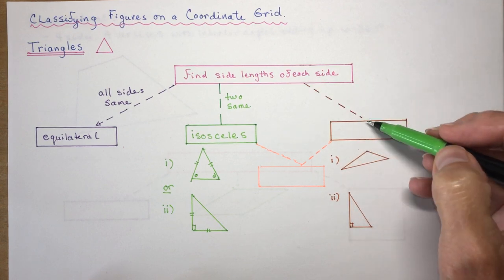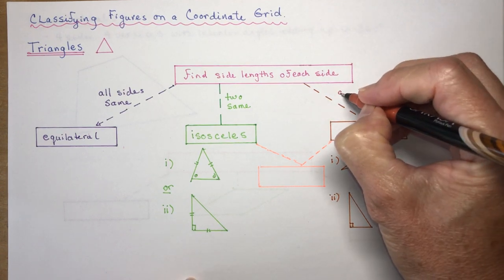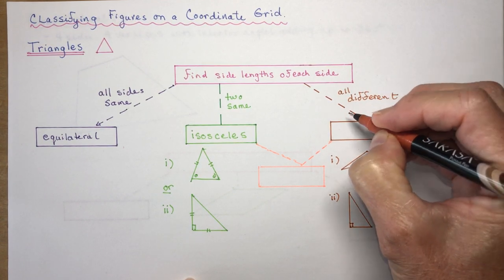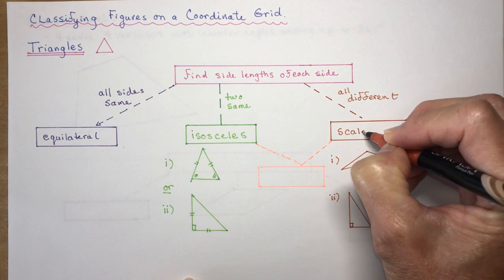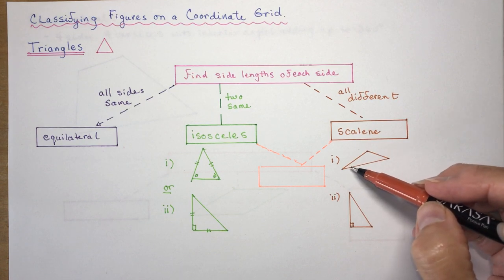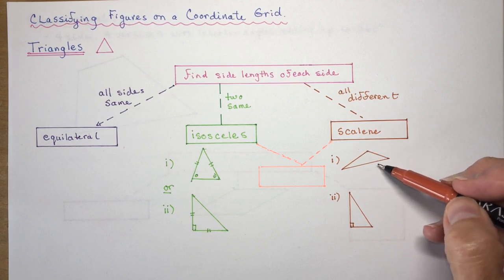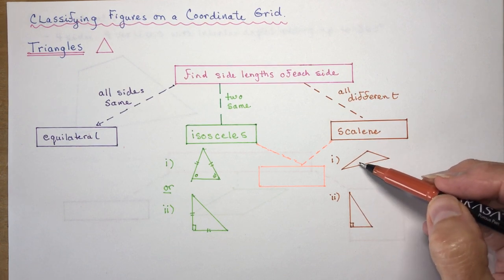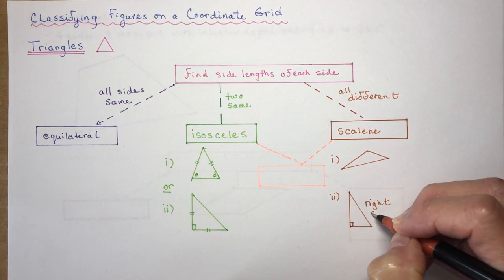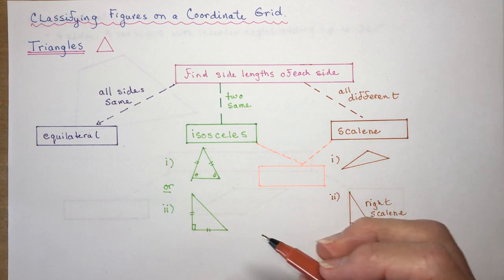If you do the side lengths and they're all different, it is called a scalene triangle — all different side lengths. You can have a regular scalene where all the angles are different, or you can have a right scalene, which means it has a right angle in it. You might be asked to prove that it is a right scalene triangle or a right isosceles.